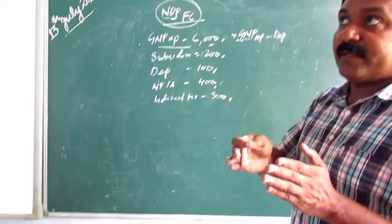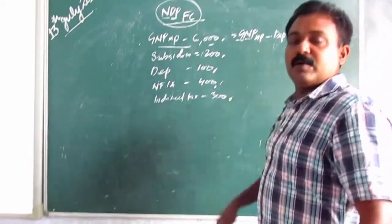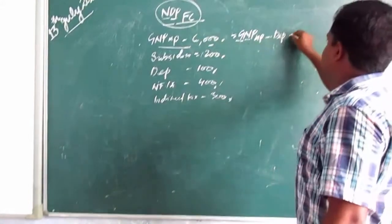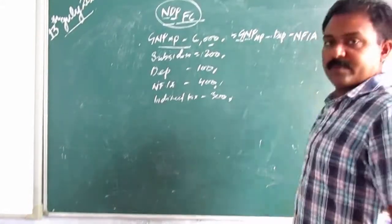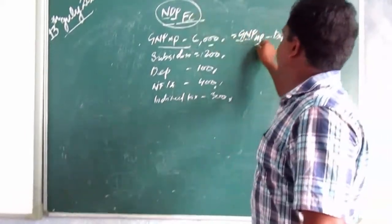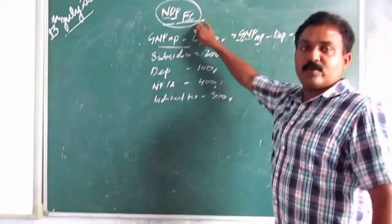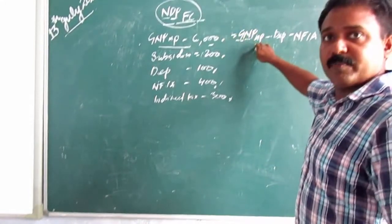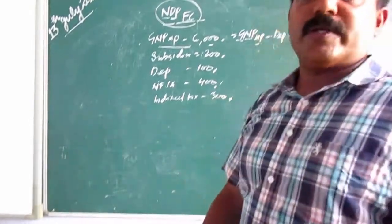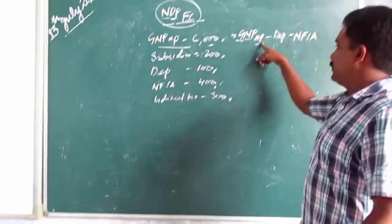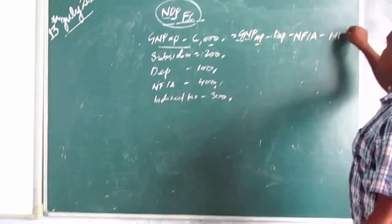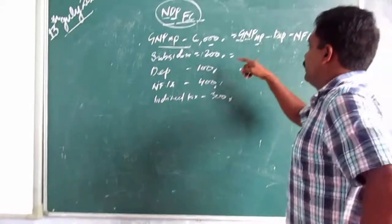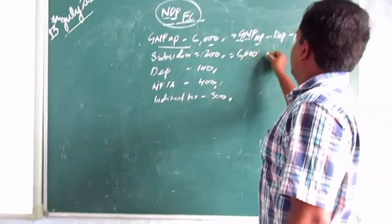Next is national versus domestic. If you add NFIA to domestic income, you get national income. So to come back to domestic, you minus NFIA. Then there is factor cost versus market price — the price at which a product is available in the market. The difference involves indirect taxes.